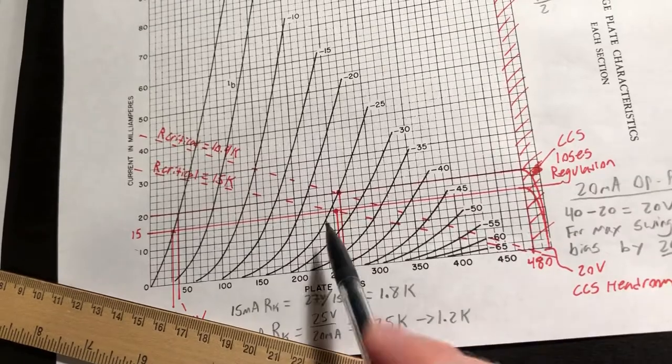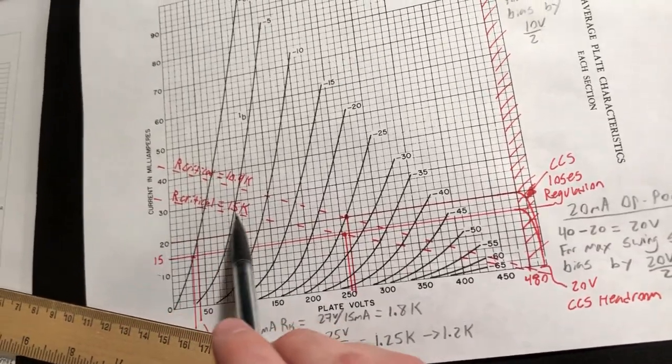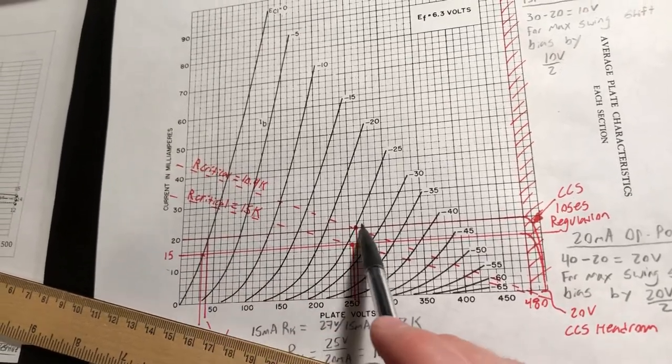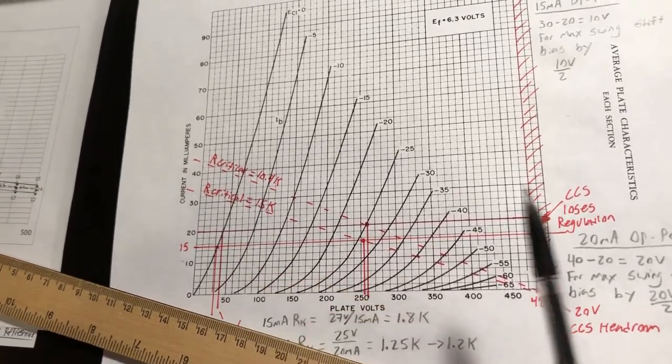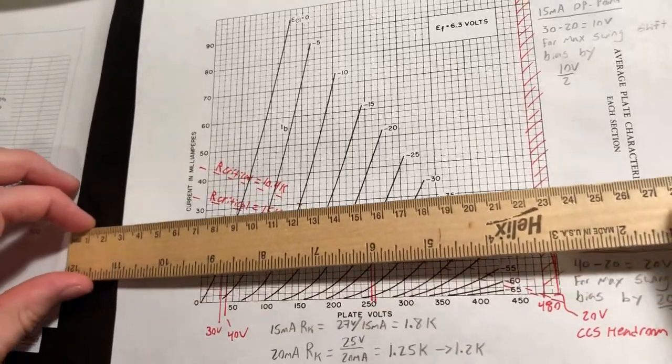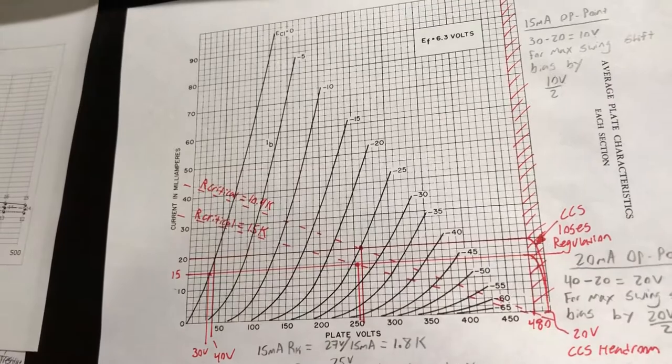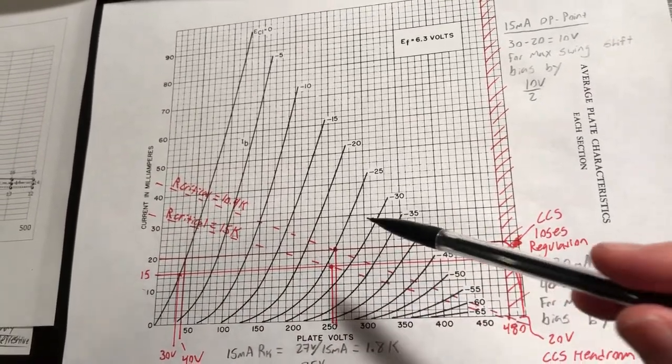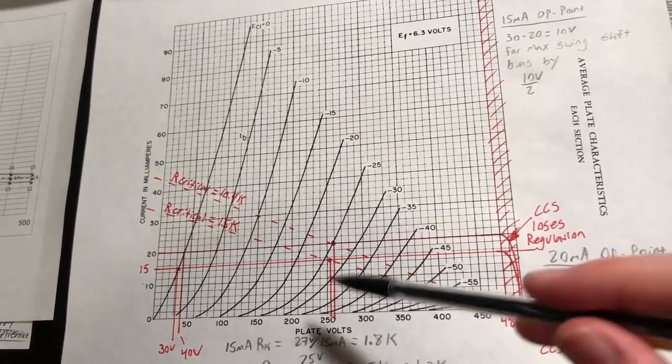And so for our 15 milliamp bias point, that critical load we can drive is 15k ohms. And for our 20 milliamp, we can drive down to a 10.9k ohm load. So a little bit of a steeper load line as we shift our operating current up using that constant current source. Again, not too much of an issue here, but it's worth noting the capabilities of this stage while we're discussing.